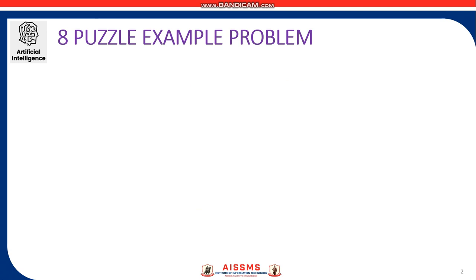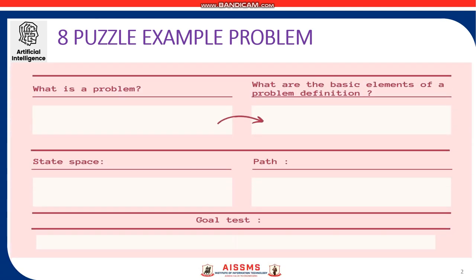Before moving into the details, let us see what do you mean by a problem. A problem is a collection of information that the agent will use to decide what to do. The basic elements of a problem definition are the states and actions.